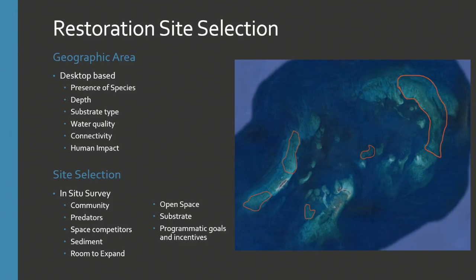Many talks today, including some plenaries, have indicated how important site selection is, and we emphasize that in our guide as well — finding your site prior to starting your restoration is first and foremost. We walk you through a three-step process. The first step is identifying the geographic areas through a desktop survey, where you look at species presence, depth, substrate types, water quality, connectivity, and human impact. For example, in Dry Tortugas, you might draw orange polygons on a map of areas of interest based on that desktop survey.